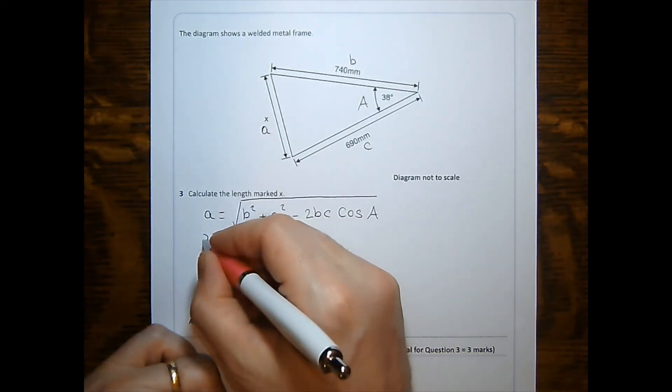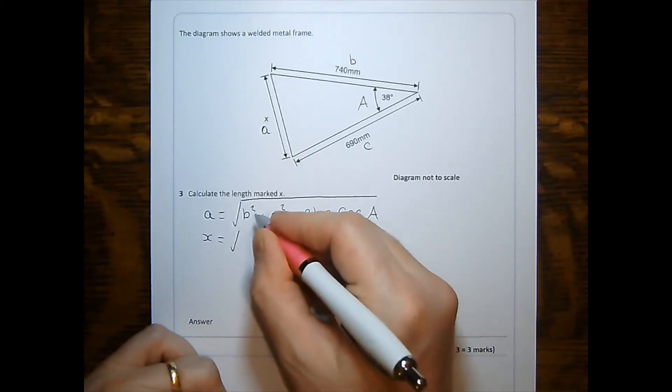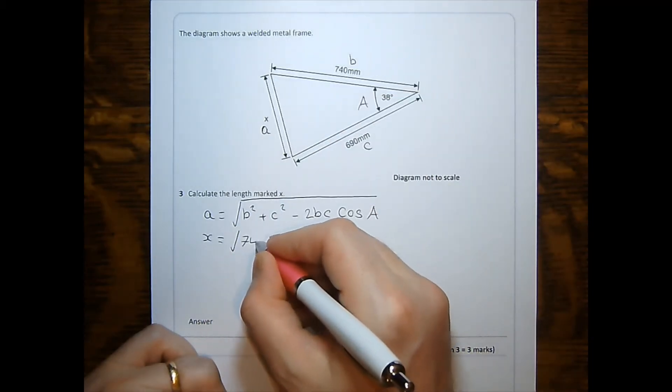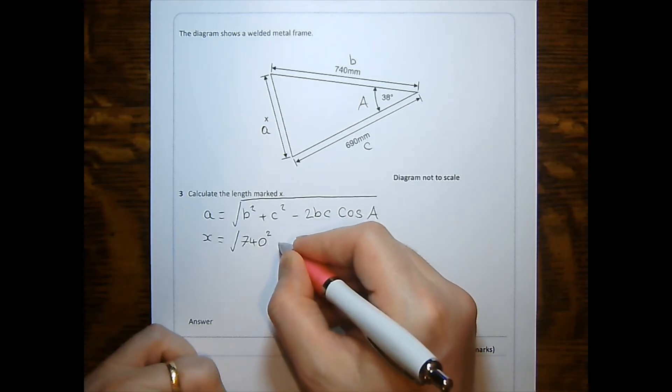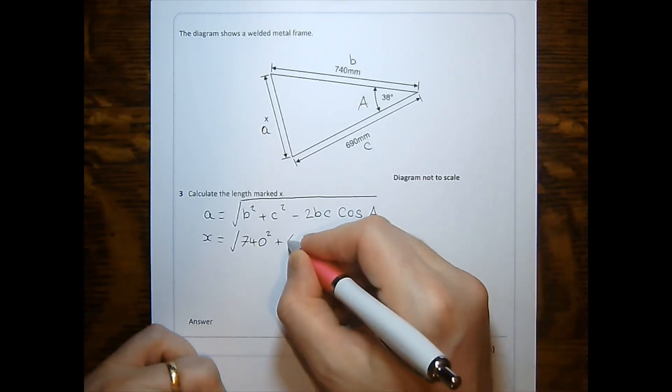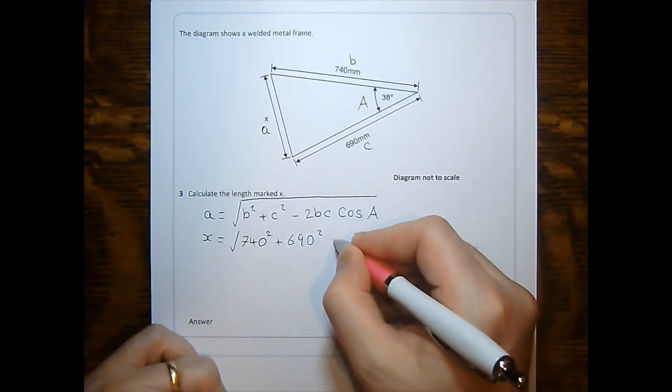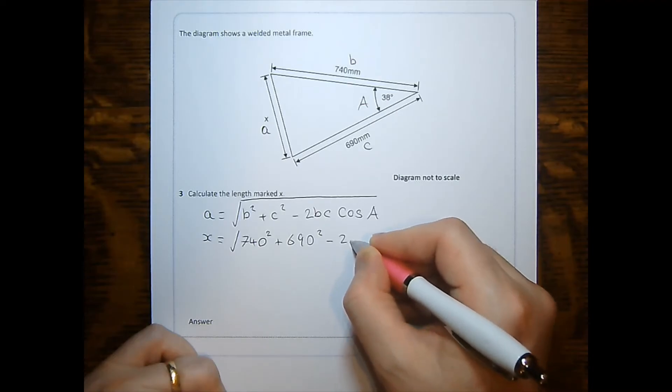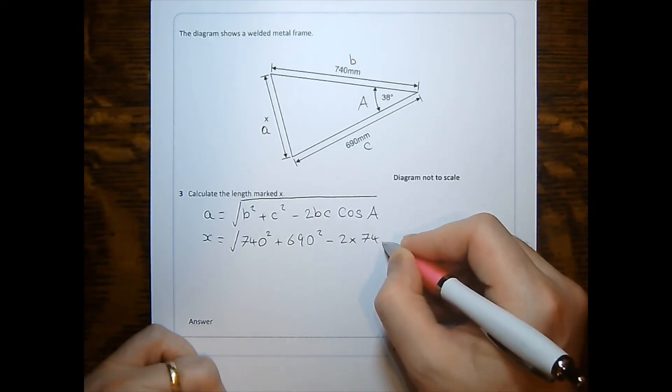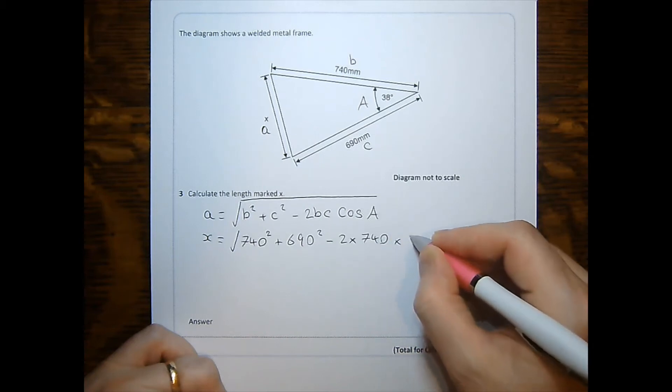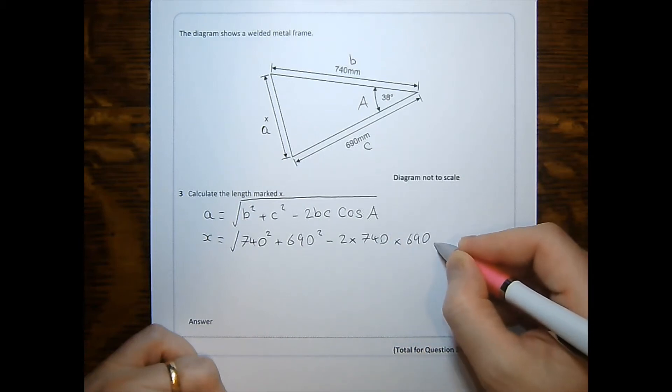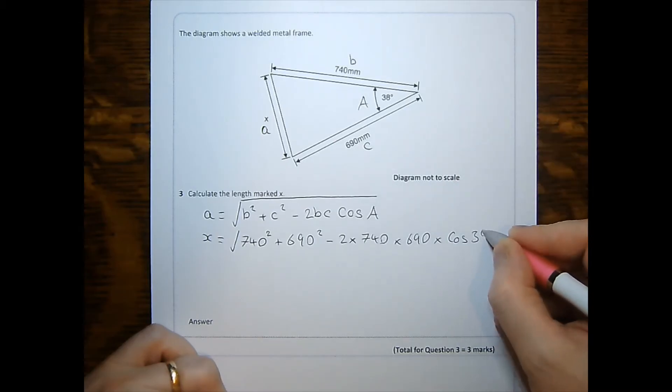Substituting: a is x. B is 740, and B is being squared, so 740 squared. C is 690, also being squared. Minus two times 740 for b, times 690 for c, times by the cosine of the angle 38 degrees. And all of that is inside the square root.